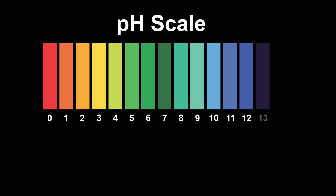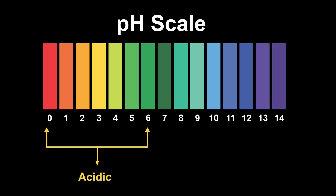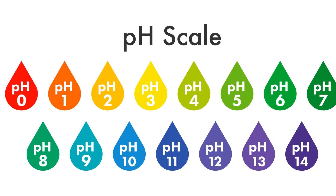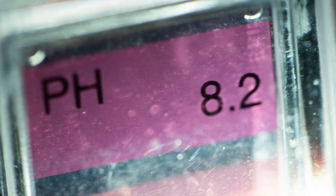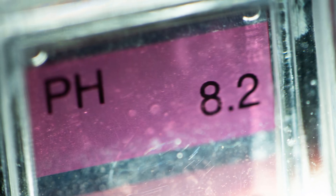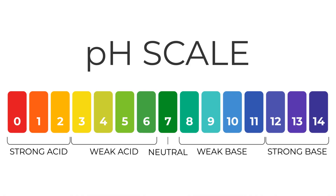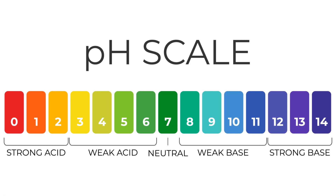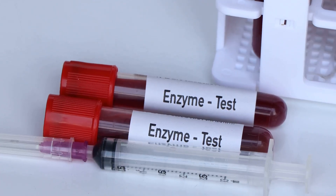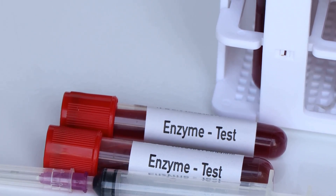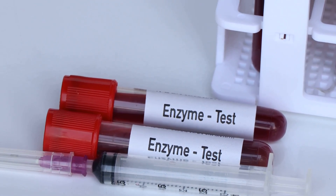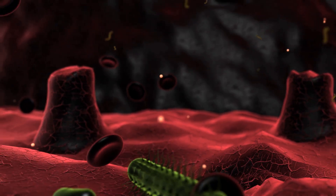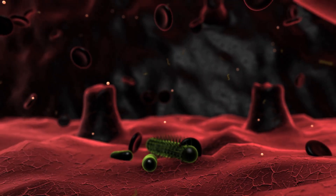Blood pH is rigorously maintained within the narrow physiological range of 7.35 to 7.45 through an integrated buffering system encompassing respiratory regulation of carbon dioxide (CO2), renal modulation of bicarbonate (HCO3), and intracellular phosphate and protein buffering. Even minor deviations from this range can disrupt enzymatic catalysis, redox balance, and ion transport processes.